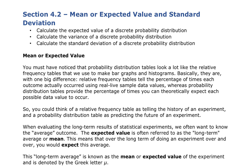When you're evaluating the long-term results of our experiments, we want to know what the average outcome is. This is the expected value. The expected value is the long-term mean or average — this is what we expect if we do the experiment over and over again. This long-term average is the mean or expected value.